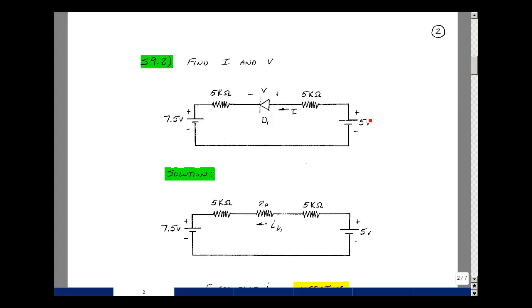Given the circuit with two voltage sources, two resistors, and an ideal diode, can you solve for the voltage across the diode and the current through it?